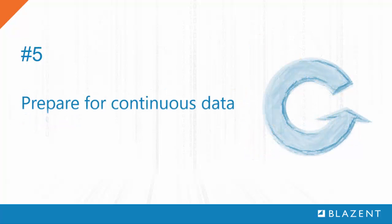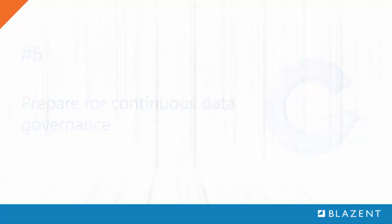Reason number five: continuous governance. It's important to note that all the aforementioned points refer to activities that are not one-time events. It pays to institute a continuous data governance approach by regularly refreshing a trusted source with normalized, accurate, and timely data. Most organizations use a configuration management database for maintaining such an authoritative source of application and asset dependency information.